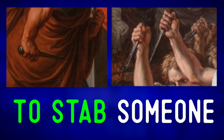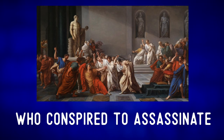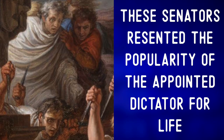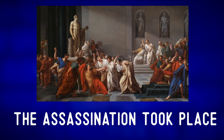To stab is when you put a knife, a dagger, or a sword into someone. There were about 60 senators who conspired to assassinate Julius Caesar. To conspire. These senators resented — resented means to feel anger or bitterness at someone — the popularity of the appointed dictator for life, and claimed to have killed Caesar in order to protect the Roman Republic.